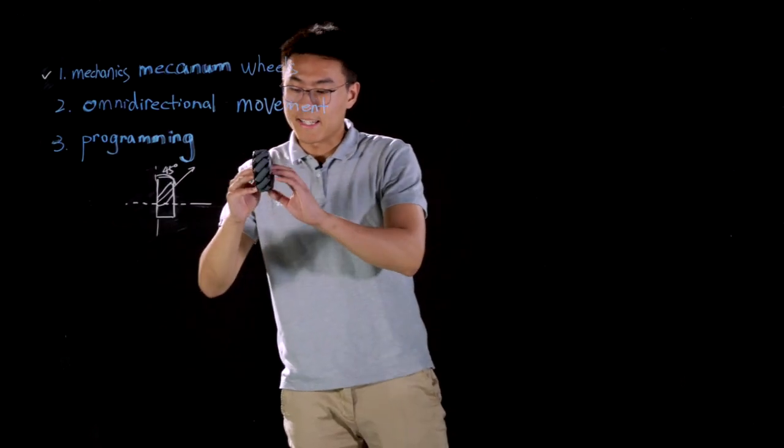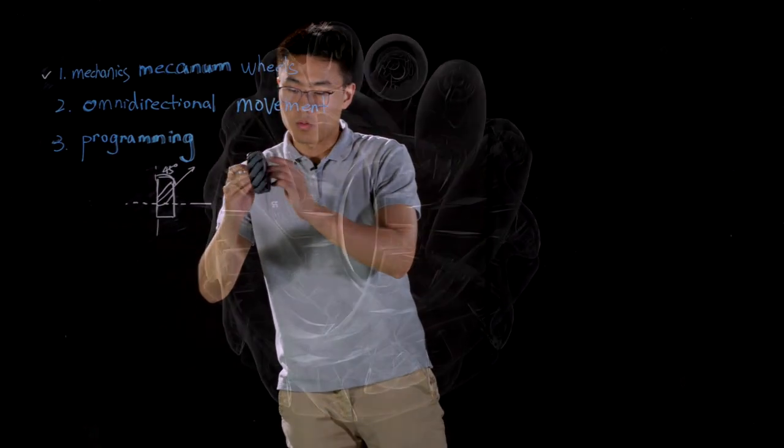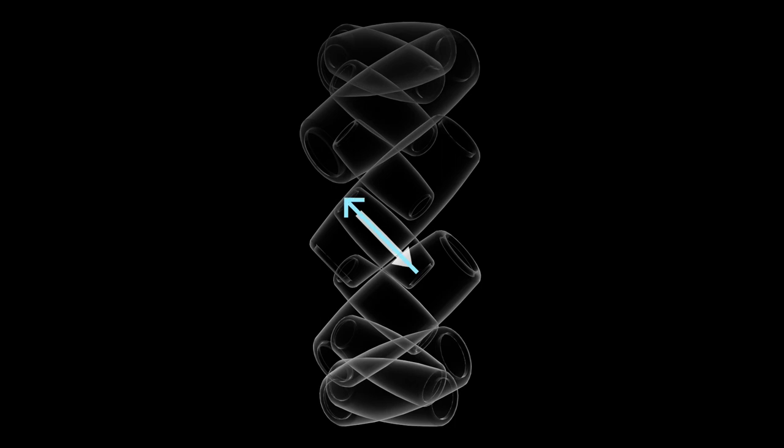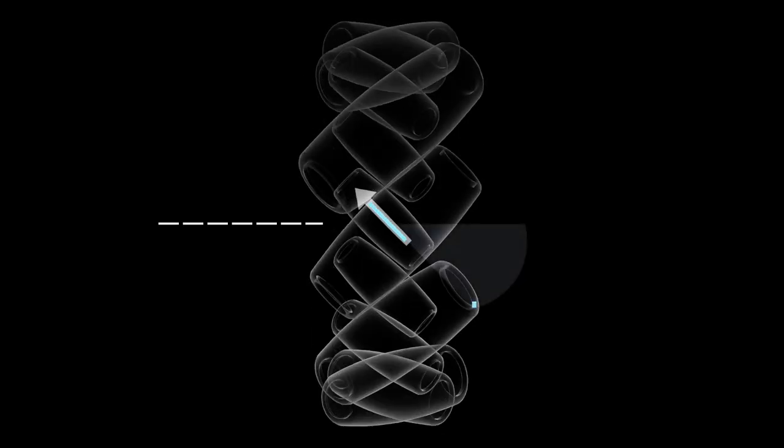The Mecanum wheel can rotate either forward or backward. During the rotation, the contact between the rollers and the ground surface can cause friction force, which is opposite to the direction of axis of rollers. So the friction force acting on the wheel is in the direction of 45 degrees along the roller.